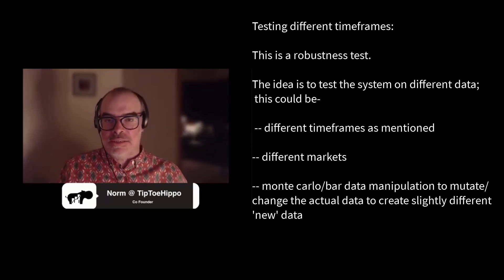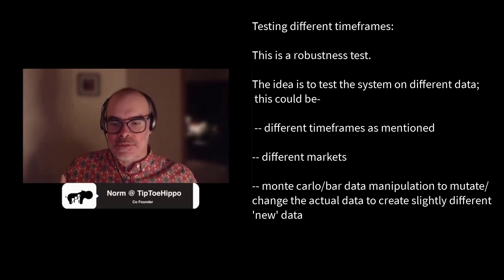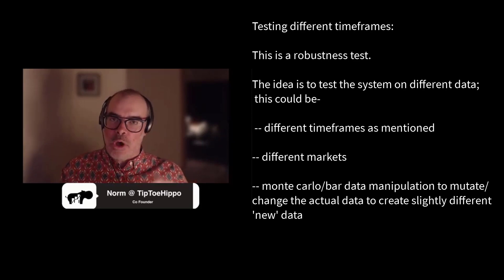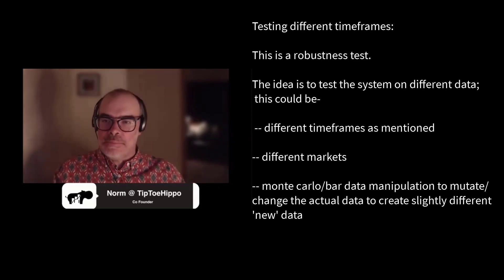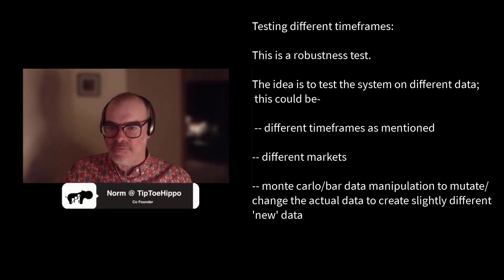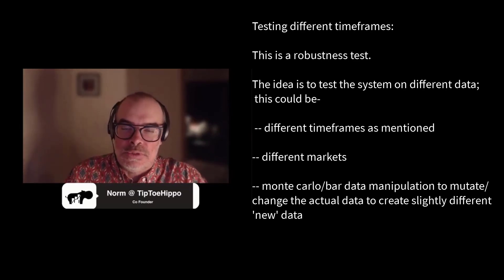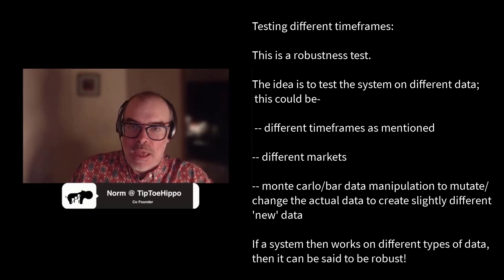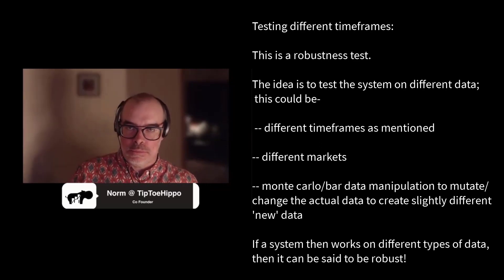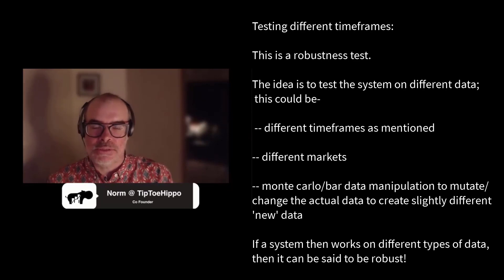The idea of using a different type of data — in this case a different time period — is that you can see if the patterns you're picking up appear on other types of data as well. So obviously if you've made your system on one hour and then you test it on four hour, daily, five minute, 15 minute, whatever it is, and it works, then your system is going to be really robust. That said, we actually don't use different time periods in that way — we use different markets and other methods, but not different time frames.